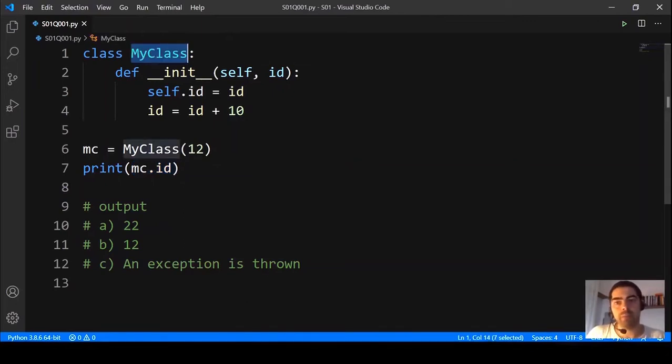This class, this MyClass, has a function, the init function, the constructor that receives a parameter that is the ID. It assigns to the self.id the value of ID and finally it changes the value of ID to be ID plus 10.